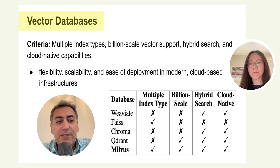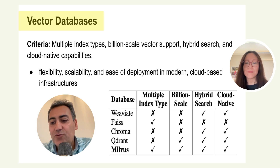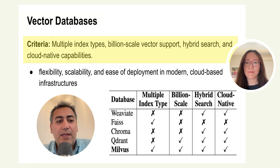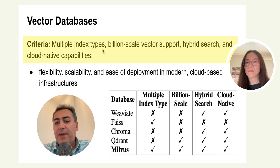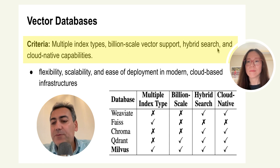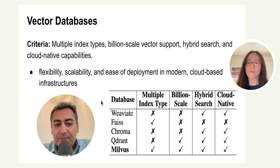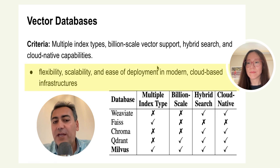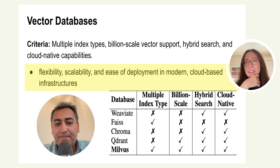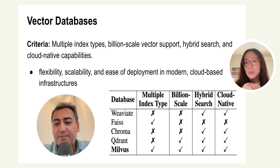Another module is vector databases, and there are plenty to choose from. In this paper they had different criteria: multiple index types, support for embedding images and tags, billion-scale vector support, hybrid search capability, and cloud-native capabilities. They selected several vector databases including Weaviate, Faiss, ChromaDB, Qdrant, and Milvus, and evaluated them on flexibility, scalability, and ease of use for production deployment. We also published a blog post about how to navigate vector search systems for your RAG system — link in the description.